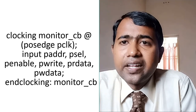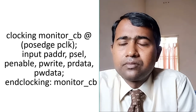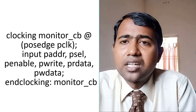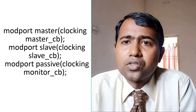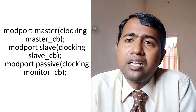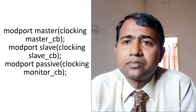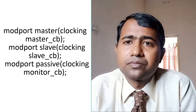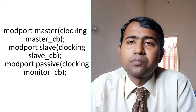Now we have finished the declaration of clocking blocks. After declaring the clocking blocks, we declare the mod ports. The interface block contains three mod ports — one for master, one for slave, and one for arbiter. The mod port for master passes the master clocking block instance in parenthesis. Similarly, the mod port for slave passes the slave clocking block instance, and the mod port named 'passive' is declared for the monitor, passing the monitor clocking block name.